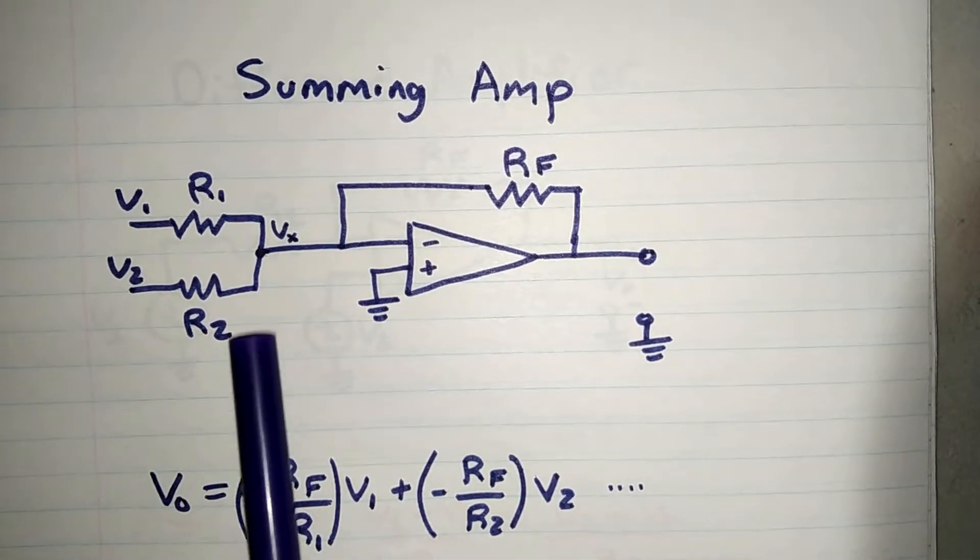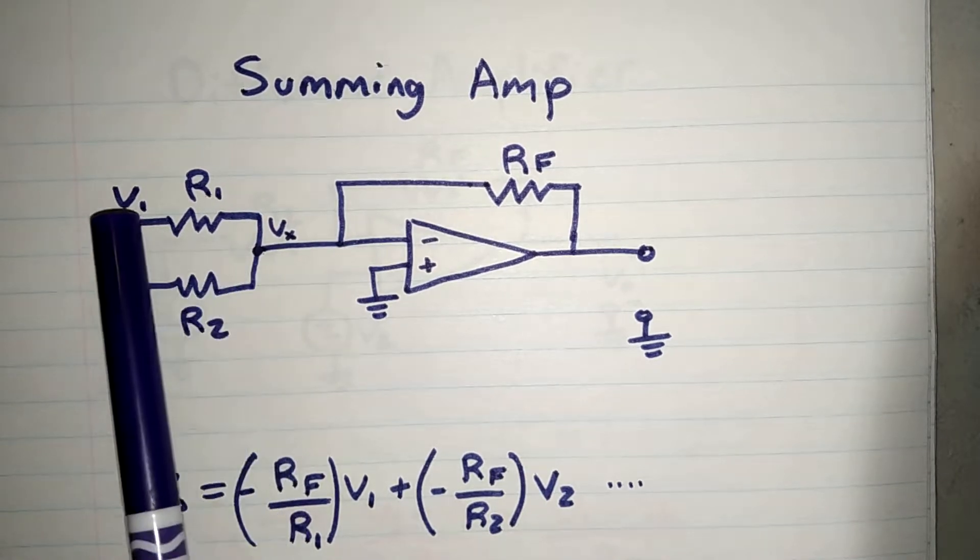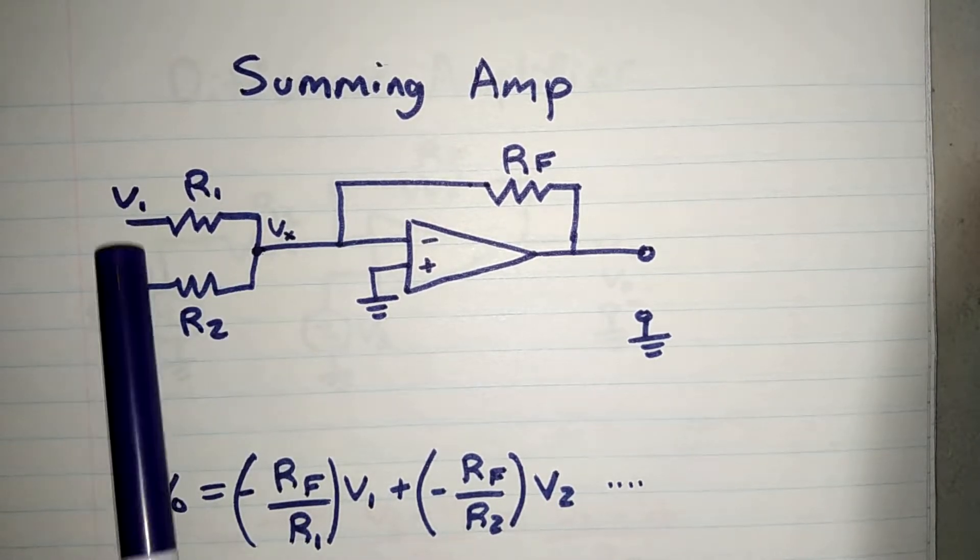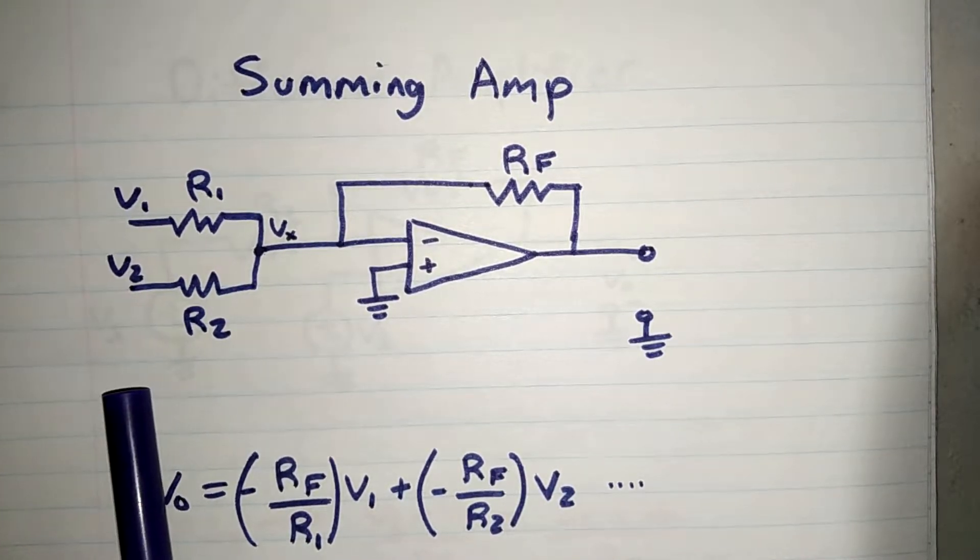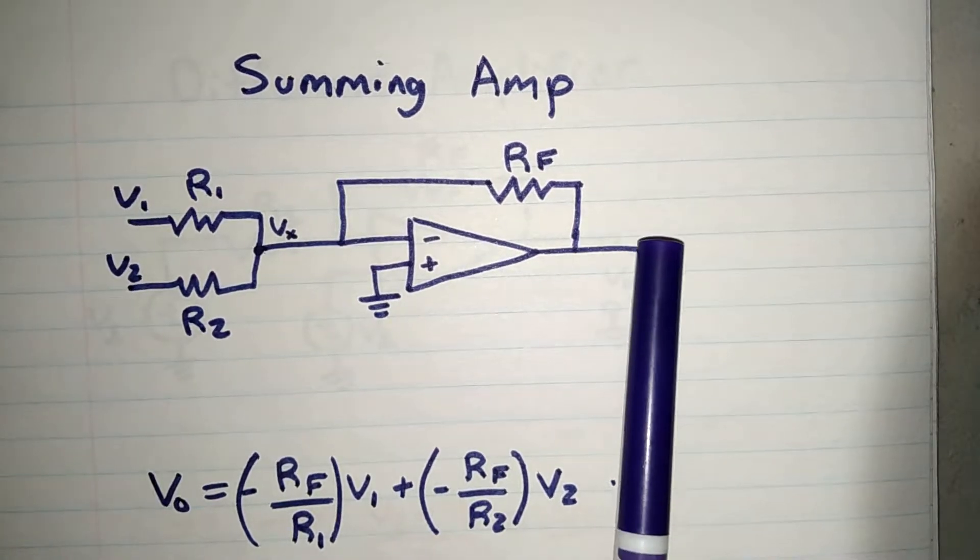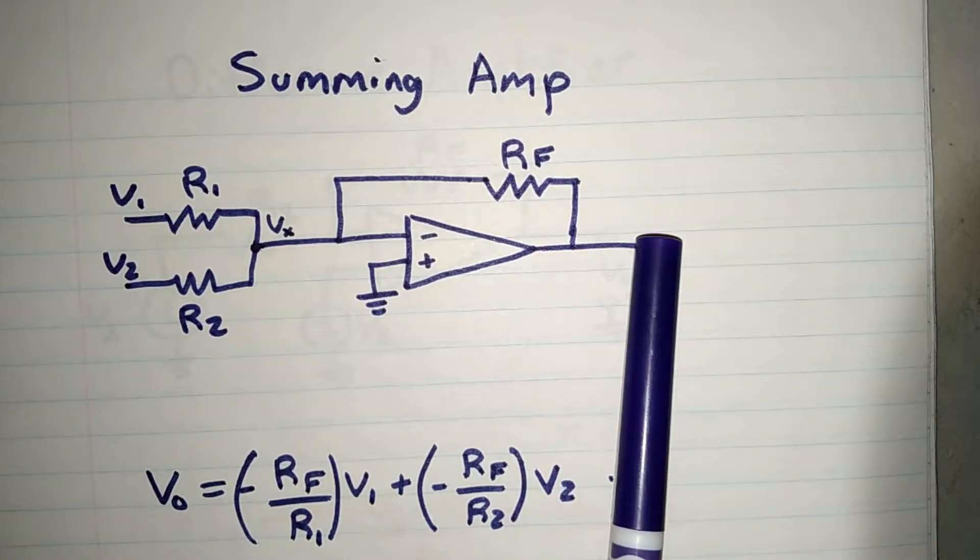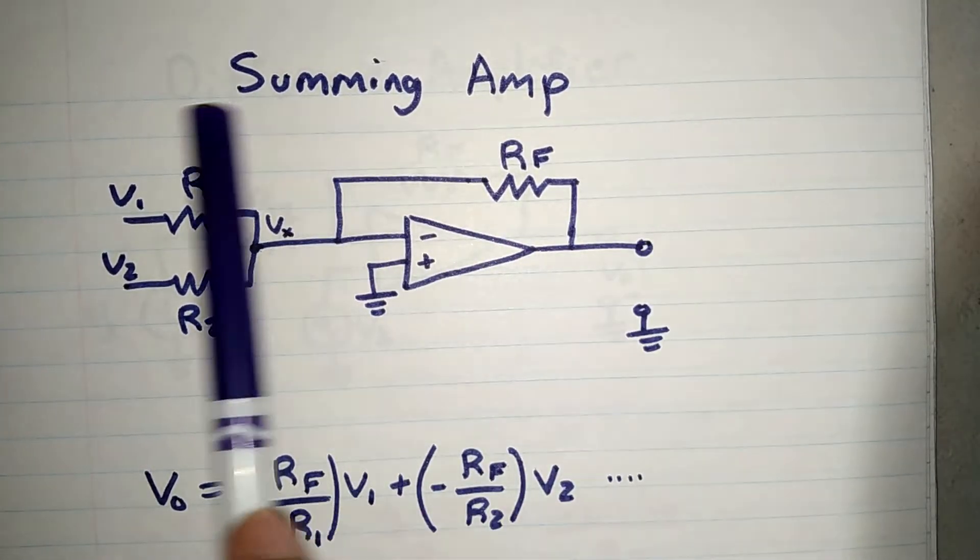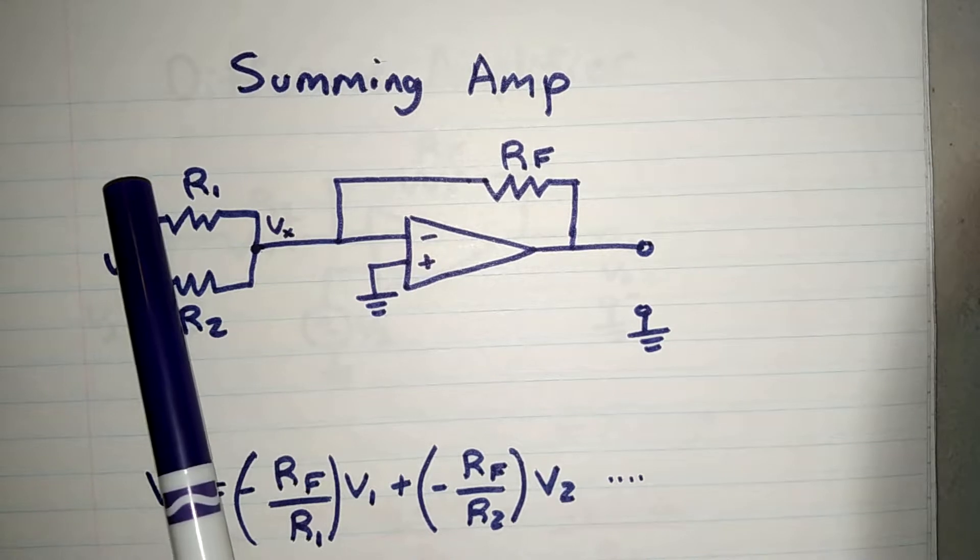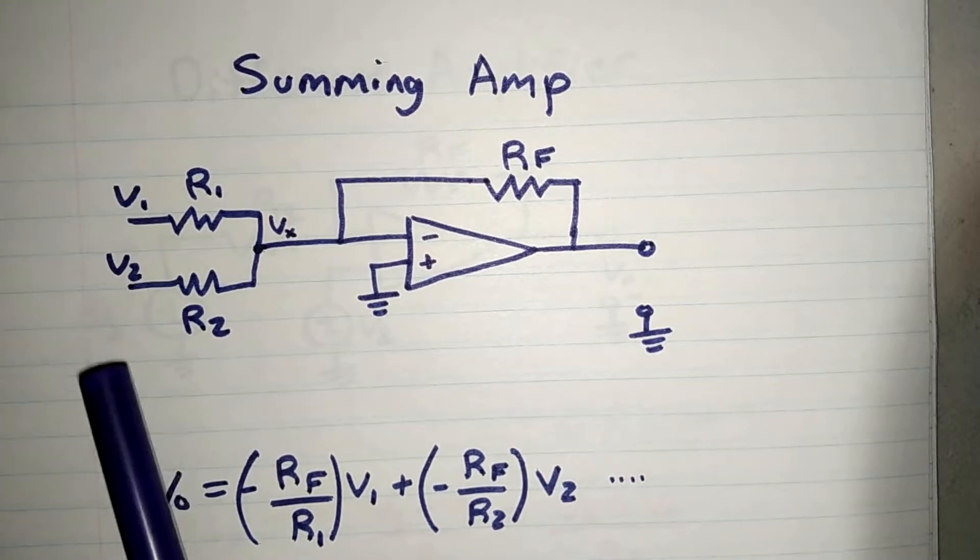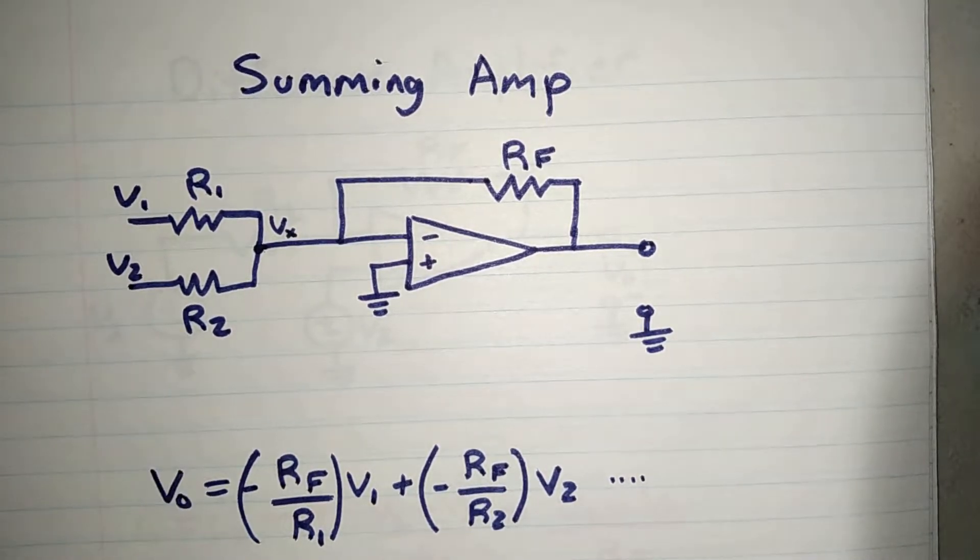I can have V3 and R3 connected to this point, such that these voltages will sum up together and produce an output times a gain. And if the gain is one, then this summing amplifier would literally just add V1 plus V2 plus V3. It would literally add them together.